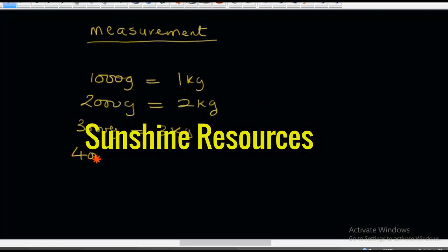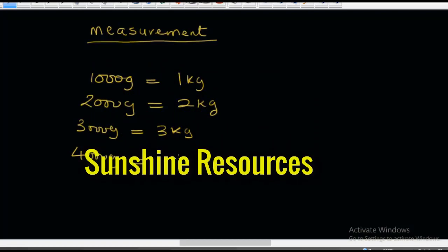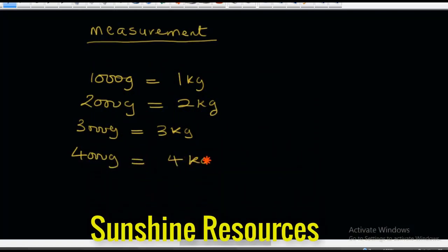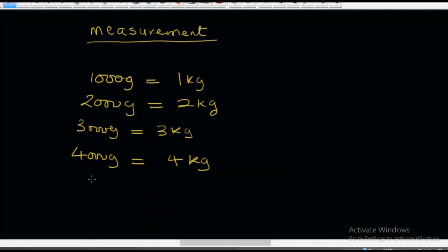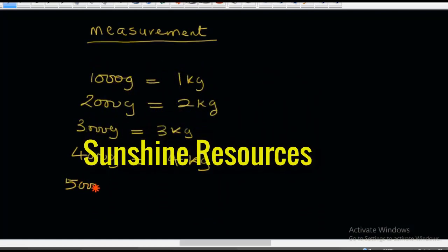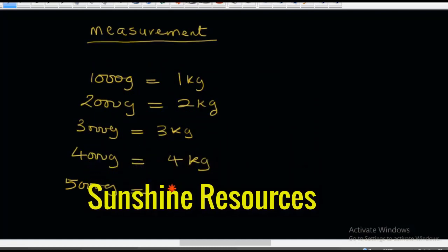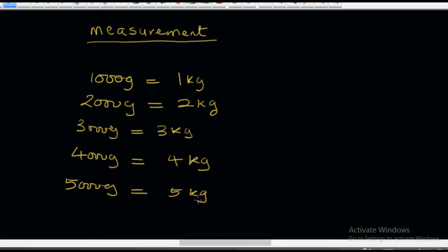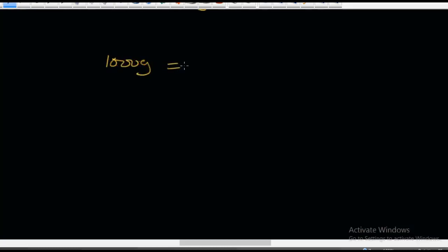4,000 grams is equal to 4 kilograms. 5,000 grams is equal to 5 kilograms. This looks so easy — I'm sure you'll get it right. We have just learnt that 1,000 grams is equal to 1 kilogram.